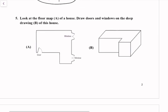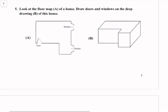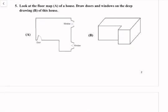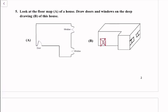Question number 5: Look at the floor map of a house and draw doors and windows on the drawing of the house. So here we have a door given. We will mark the door here. This is the door on the drawing of the house. Here we have a door, and here we have two windows.